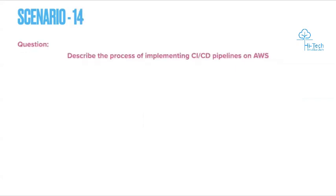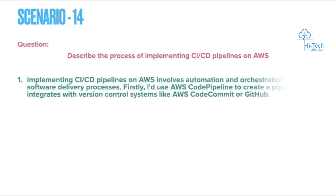Scenario 14: Describe the process of implementing CI/CD pipelines on AWS. Implementing CI/CD pipelines on AWS involves automation and orchestration of the software delivery process.